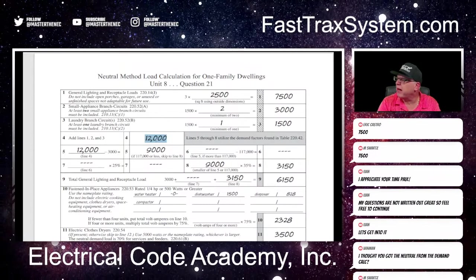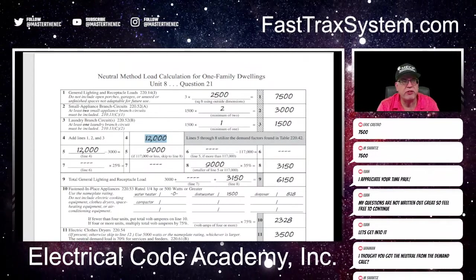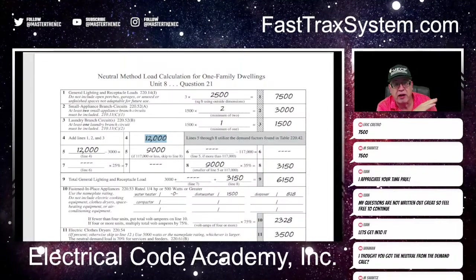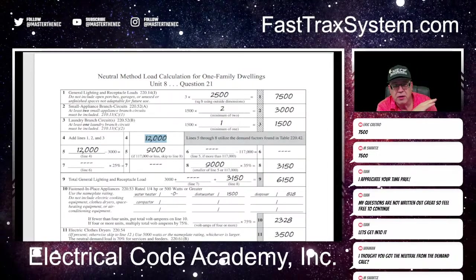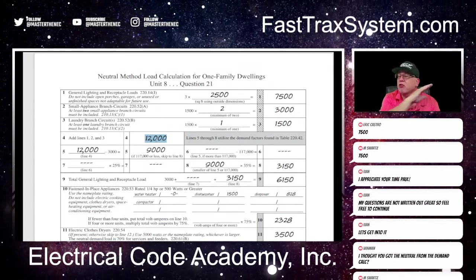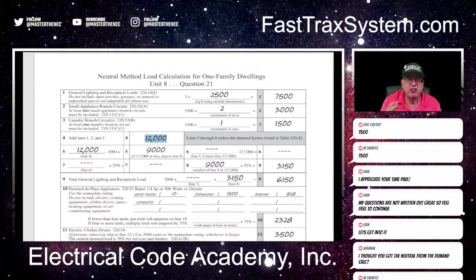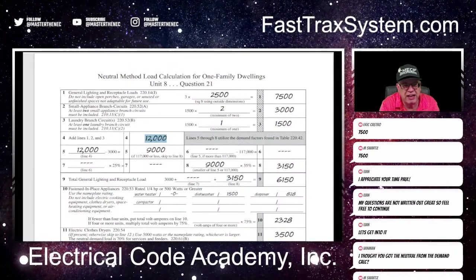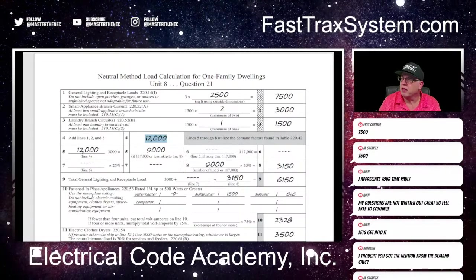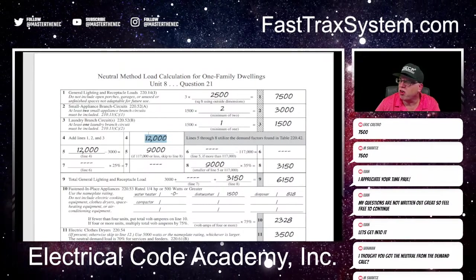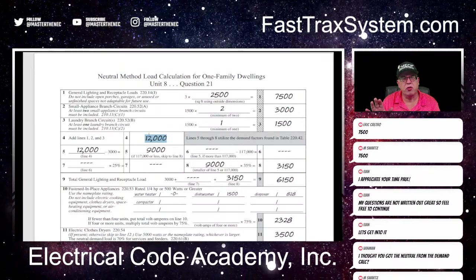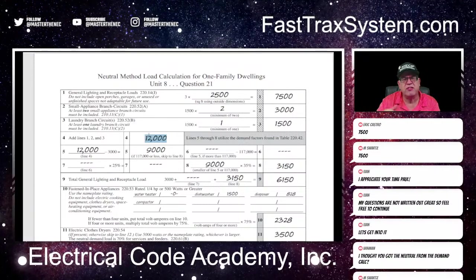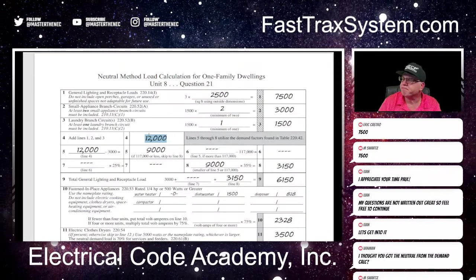So that's 12,000. Now we get to apply 220.42 — which is demand factors. Remember, we got to apply that for the ungrounded conductors when we're resizing using the standard method. Well, guess what? We get to apply that same thing. If it's good for the hot conductors, why shouldn't it be good for the neutral conductor? The first part of your neutral sizing calculation is so easy, because you're going to do everything you did when you did the standard method.